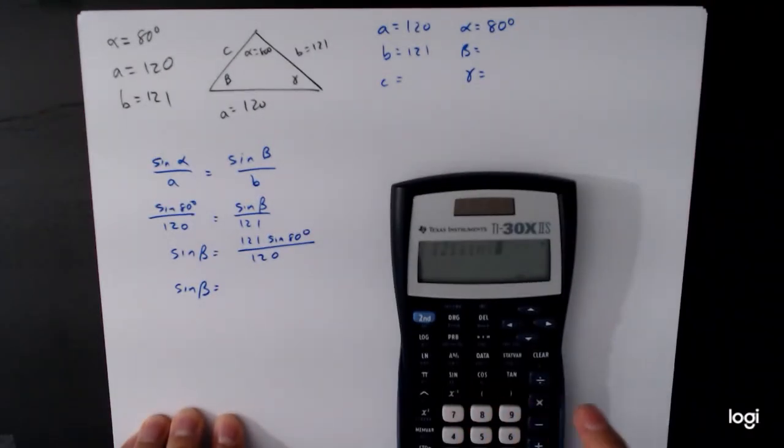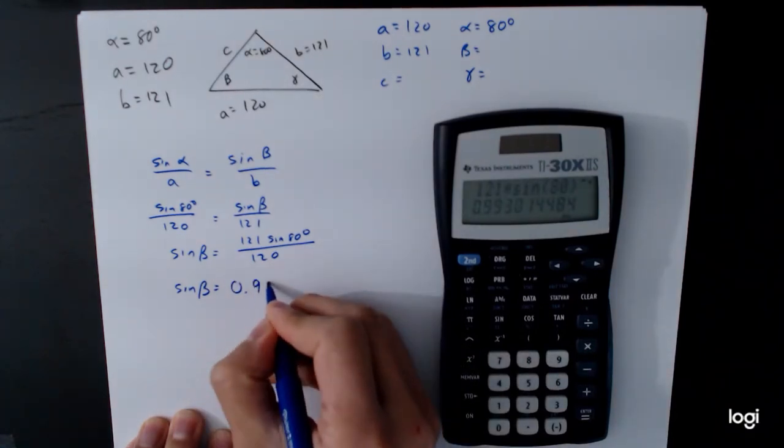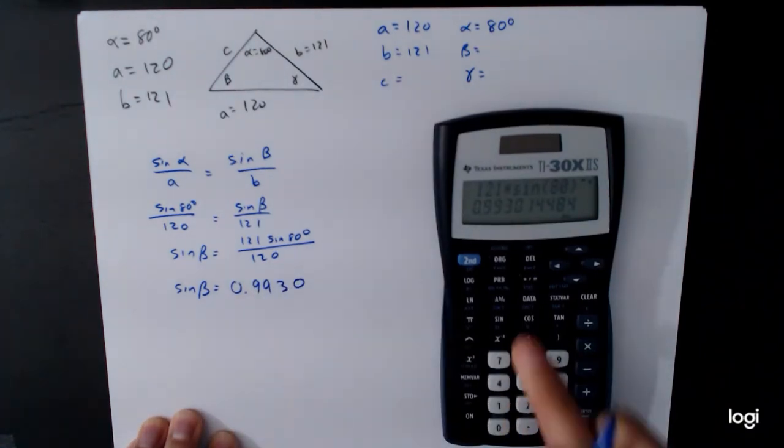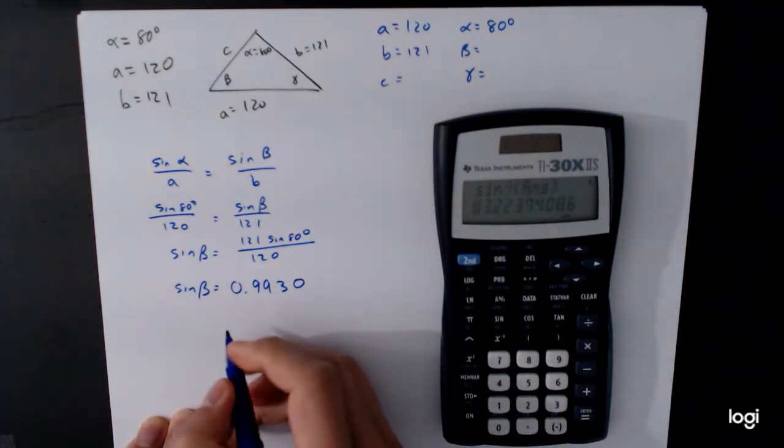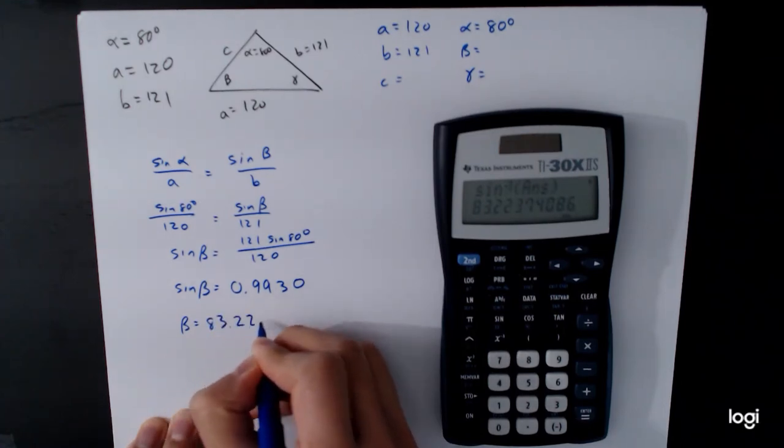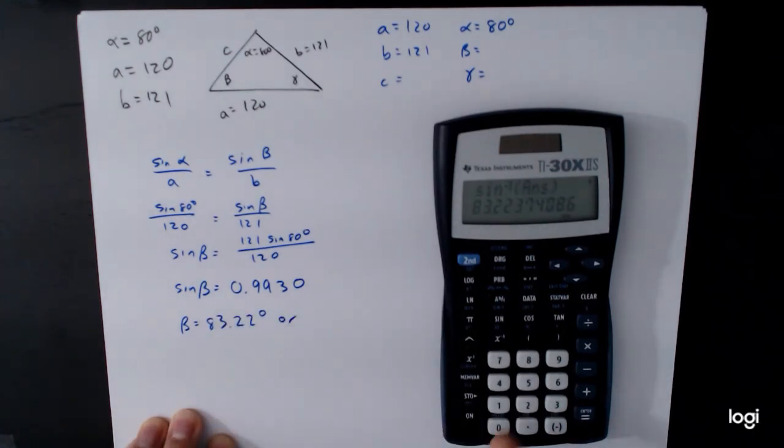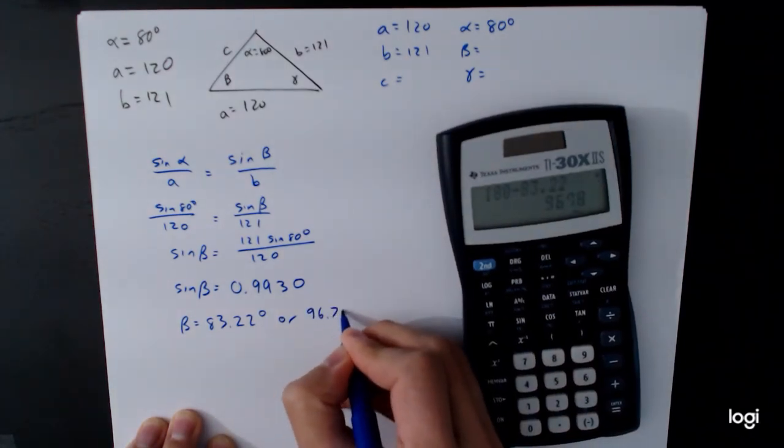So we're going to throw that value into a calculator, 121 times sine of 80 divided by 120 is equal to 0.9930, let's take the inverse sine of that value. We get beta is equal to 83.22 degrees, or 180 minus that, 96.78 degrees.